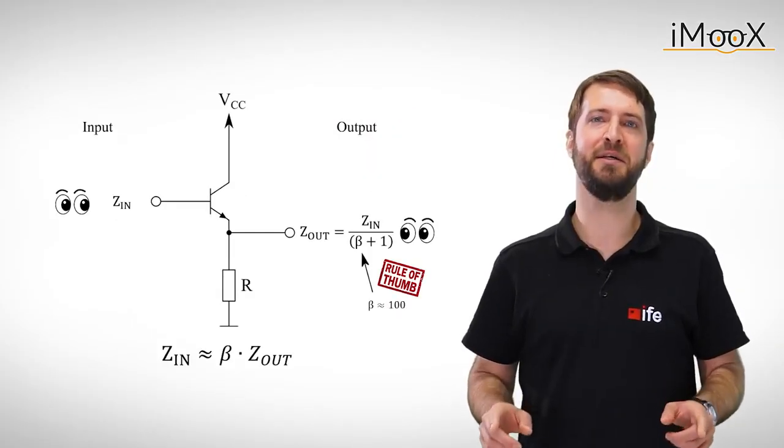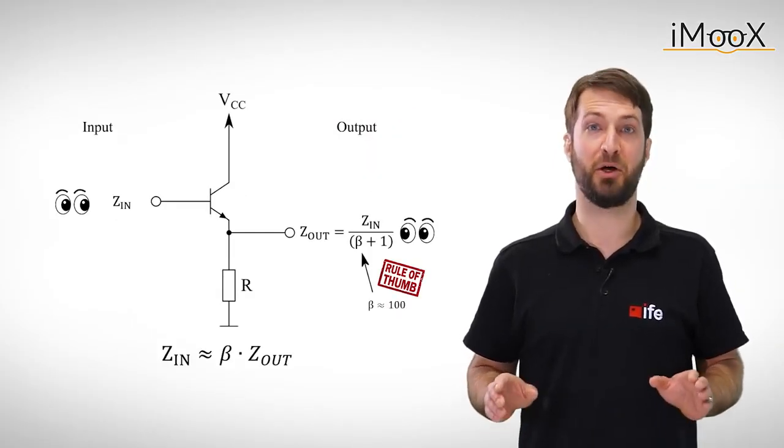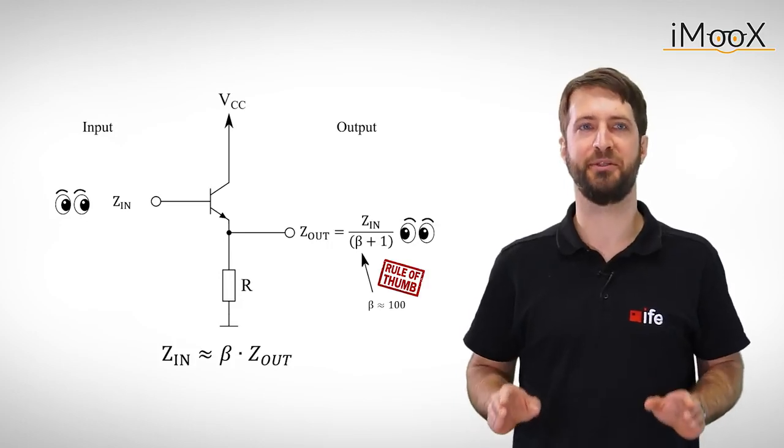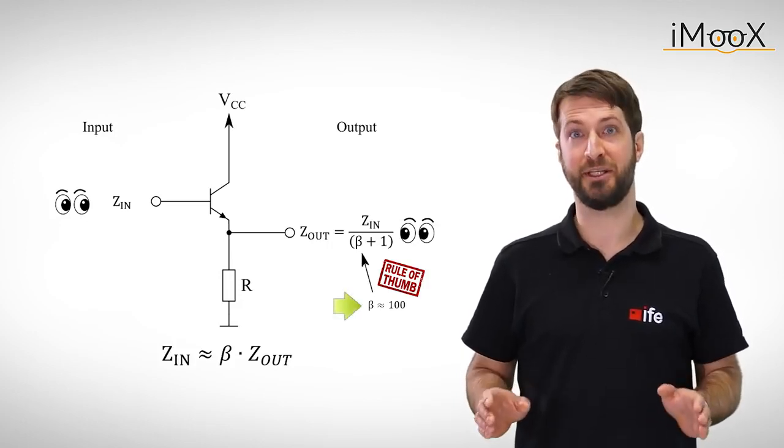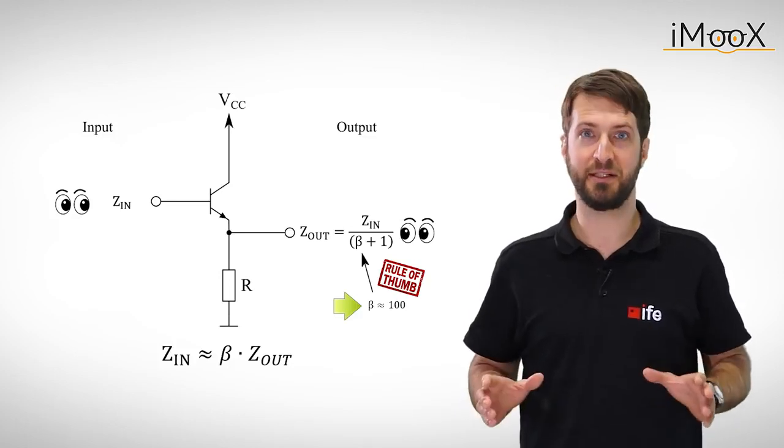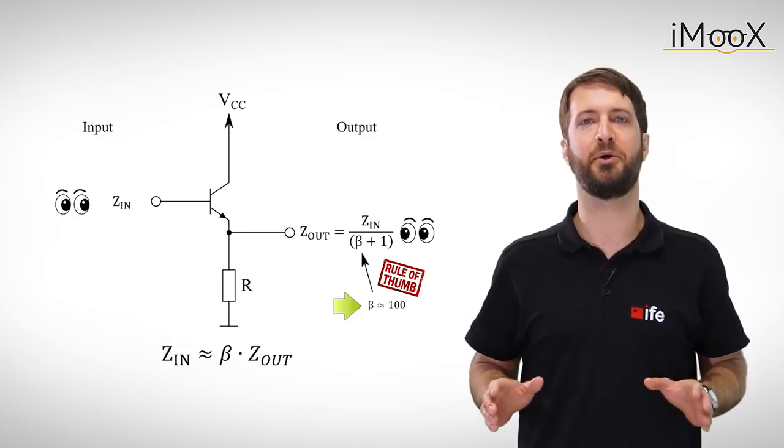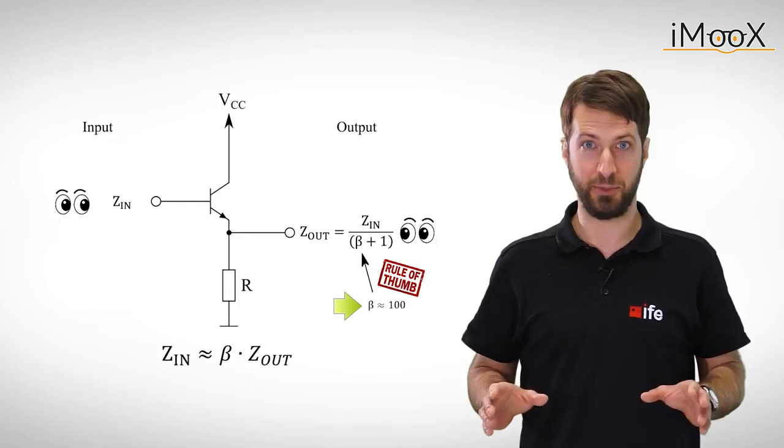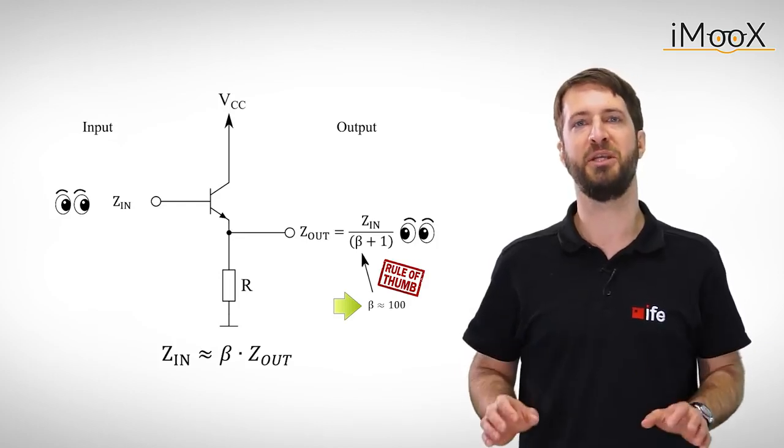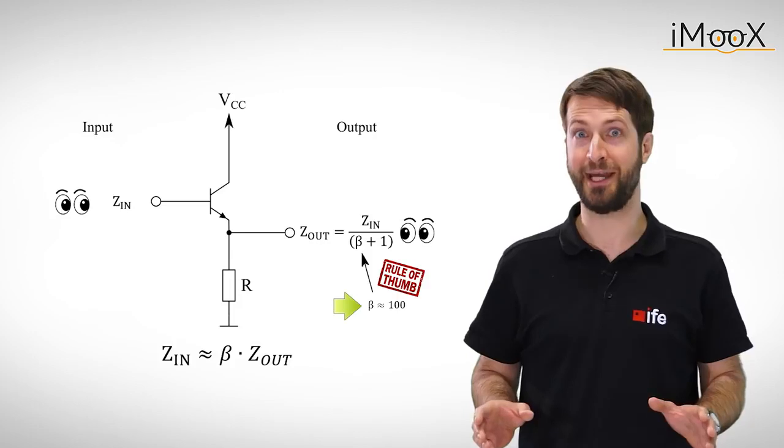It even does better, since the output impedance is about beta times smaller than the input impedance. Remember that beta is approximately 100. This allows a weak input signal source to drive a load at the output of the follower, which it would not be able to drive by itself. Seems pretty useful, right?